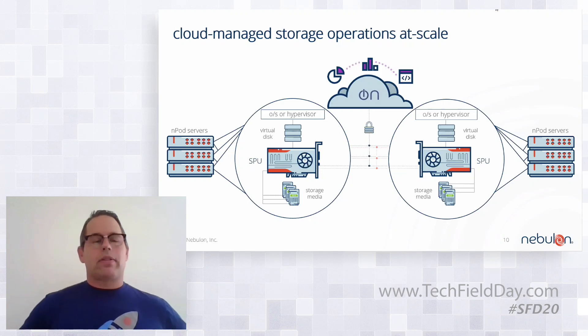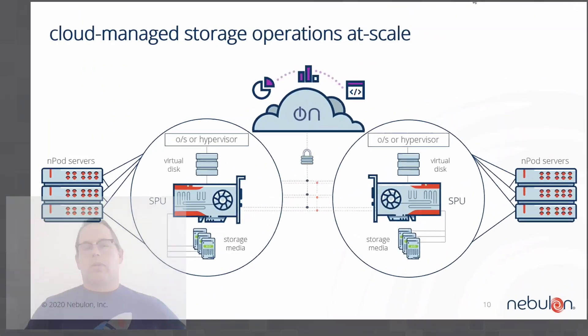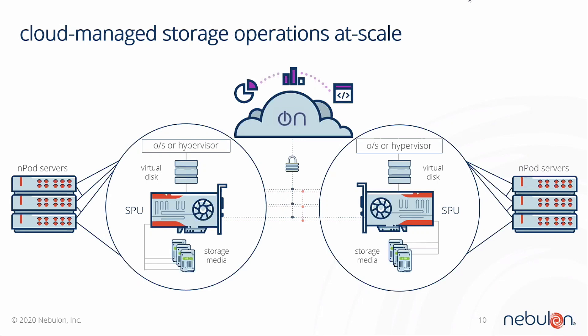This slide pulls everything together. You'll see that we have multiple N-Pods, all with SPUs in them — up to 32, as mentioned. These SPUs all talk to each other over our own Ethernet network. It's not a SAN and doesn't require a custom SAN — it's just a standard Ethernet network, and they're all sharing data across each other. There's also a one-gig management port that connects up to the Nebulon cloud, and that's where all management for the card actually takes place. All the stuff the customer sees — the way they interface with the card, manage it, and look at all the data from the card — that's in the cloud. That's where all the magic happens.